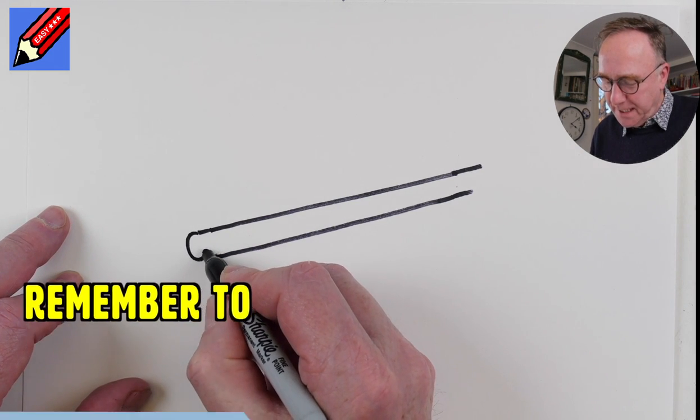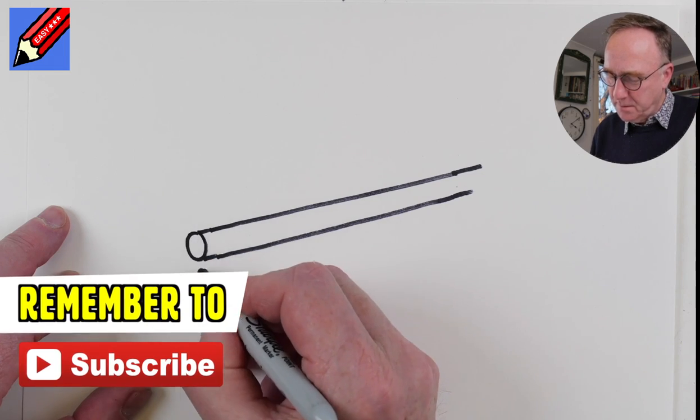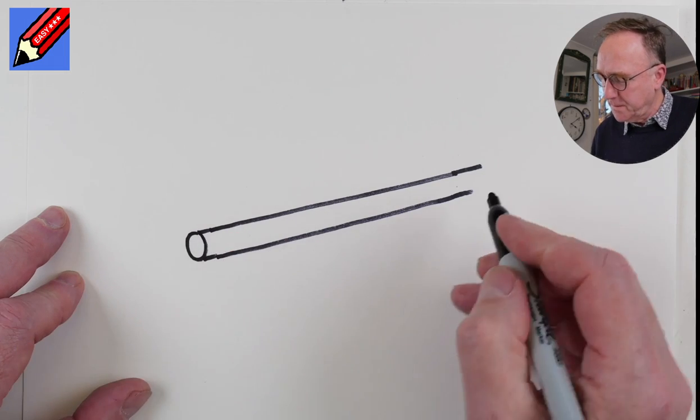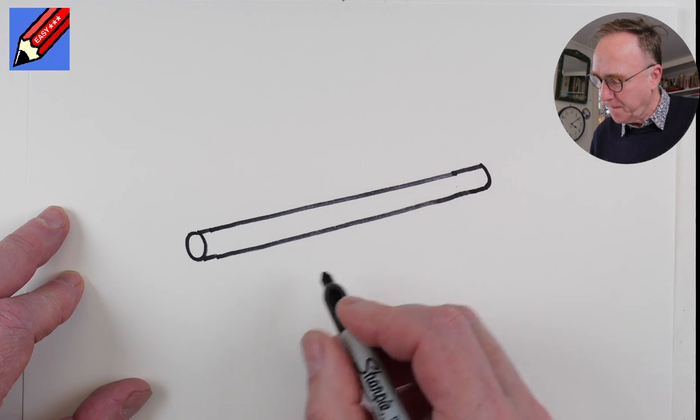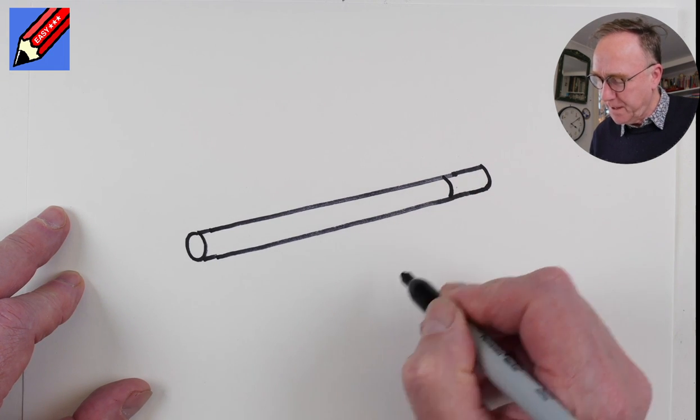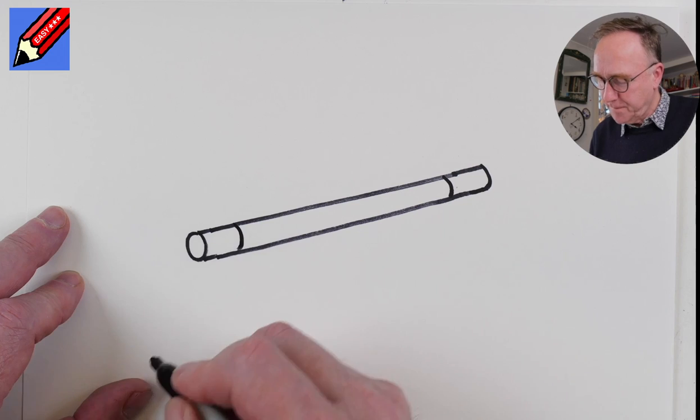And then at the ends we want ellipses, they're not quite a circle, slightly squashed in that way and at this end we want a nice curve. And we want a curve there and a curve there.